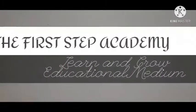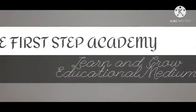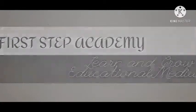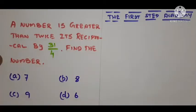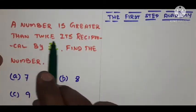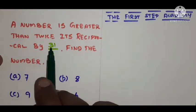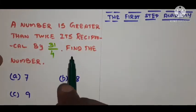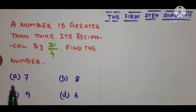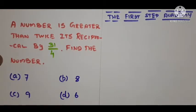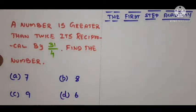Hi, hello and welcome to the First Step Academy Learn and Grow Educational Medium. The question we have here to find the solution: a number is greater than twice its reciprocal by 31/4. Find the number. The given options are: option A) 7, option B) 8, option C) 9, option D) 6.